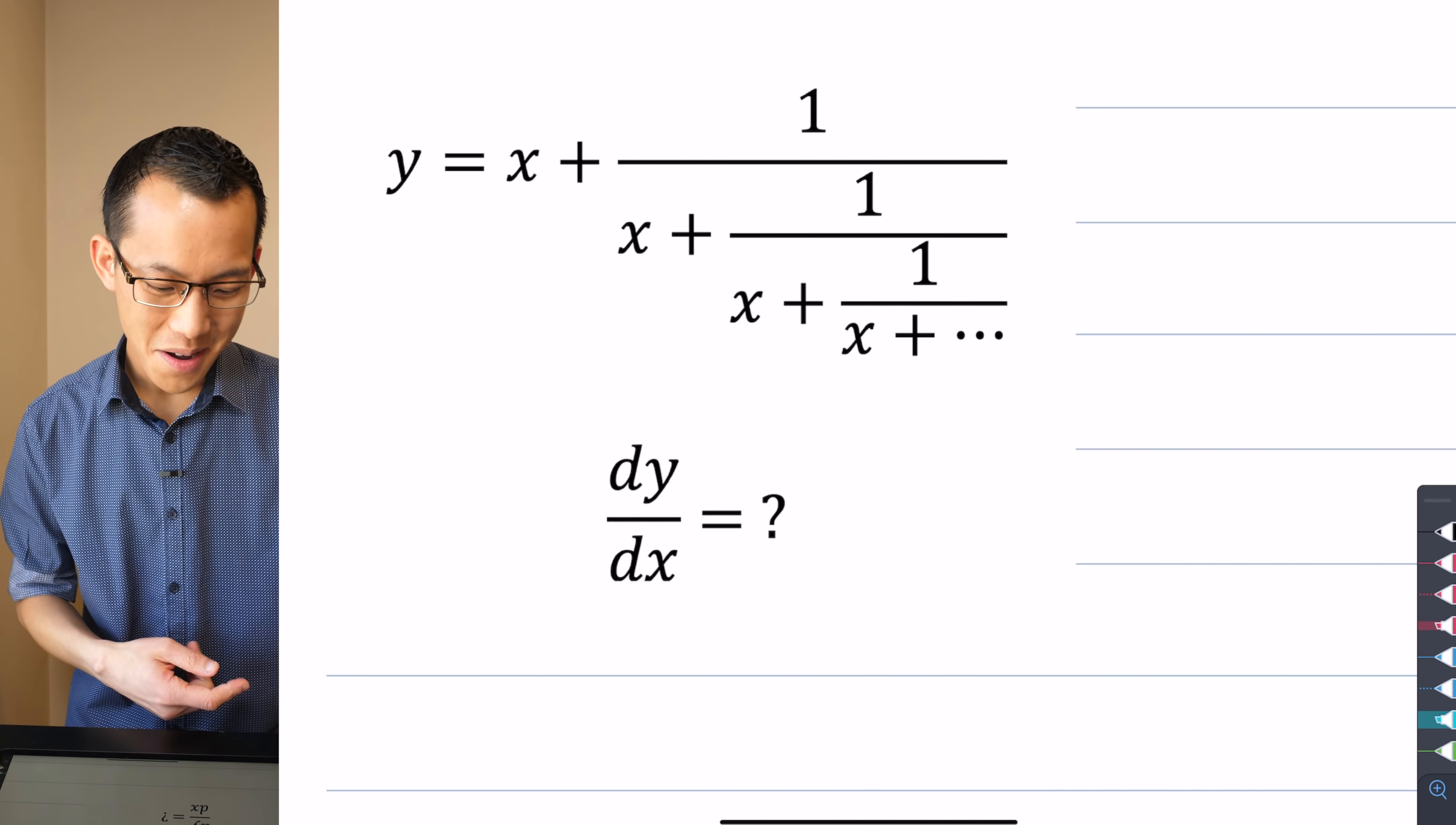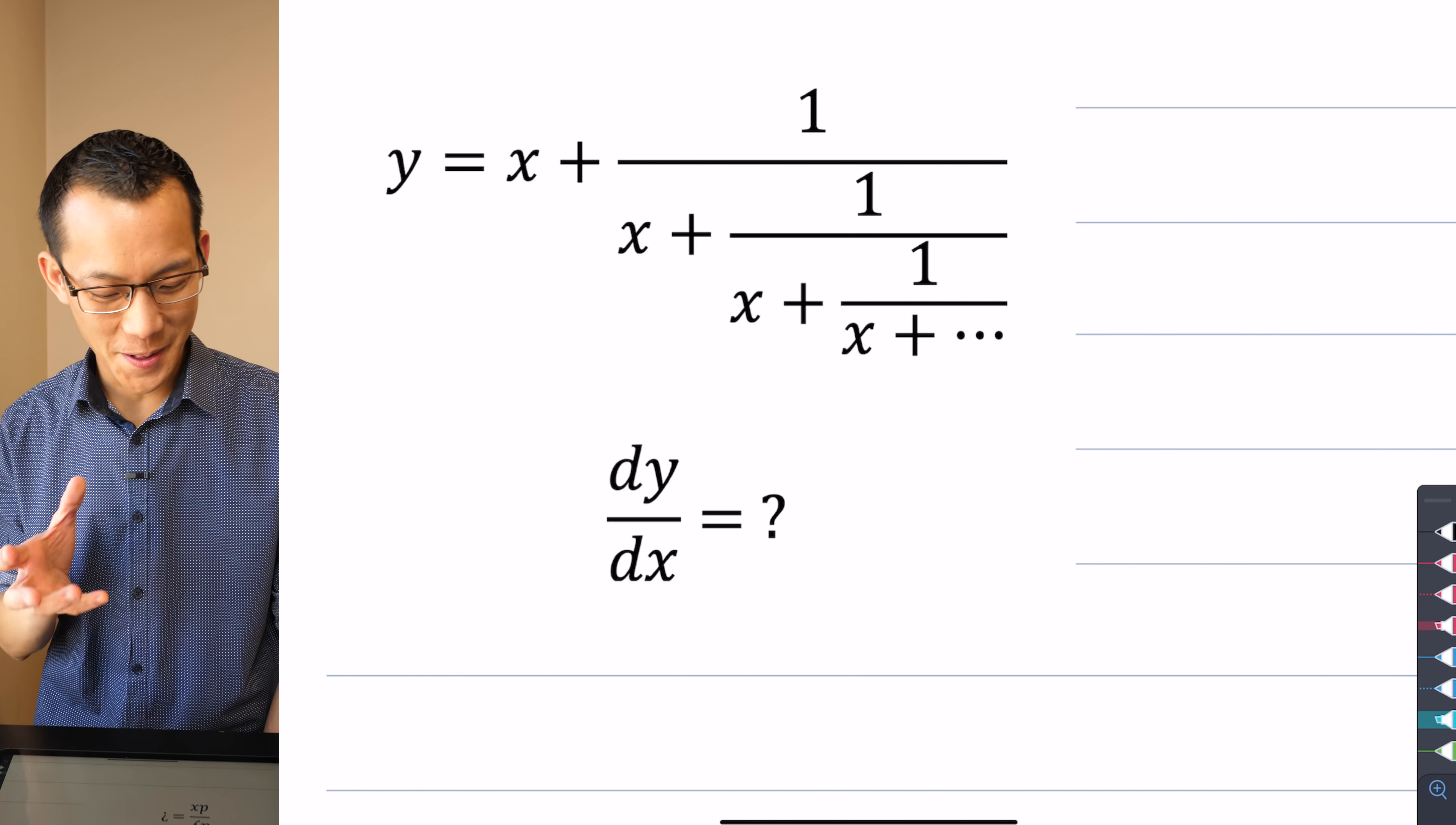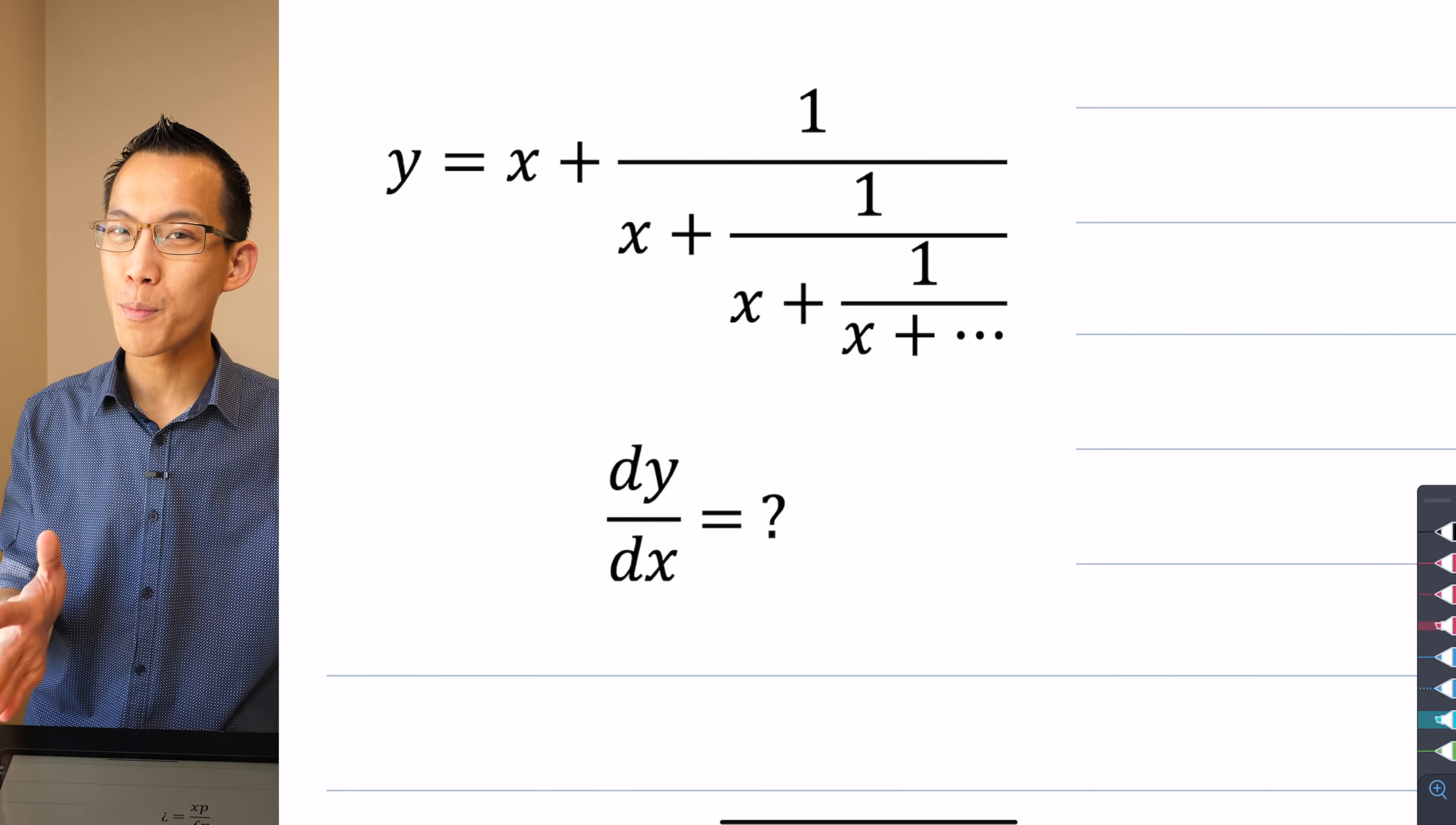Y equals x plus 1 over x plus 1 over x plus 1 over, and then it goes on forever. If that is how we define y, then what is the derivative of y with respect to x? What is the gradient of this weirdo looking function?